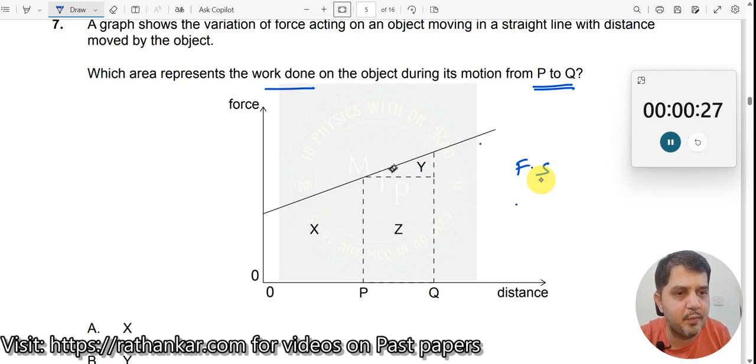Therefore, it should only be Y and Z together. Don't answer just Y. It is the area of the graph made by the force-displacement graph line with respect to the distance line.